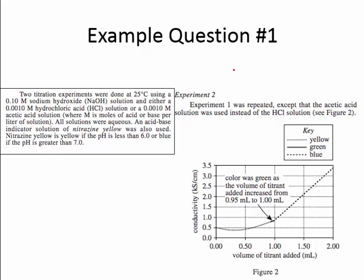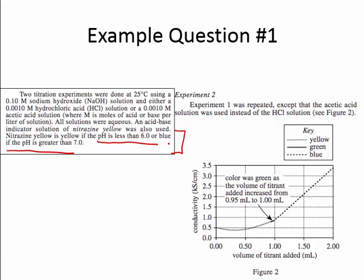I've copied the graph and the relevant piece of the passage that gives us the information we need on pH. If you were encountering this on the ACT, you would skim the passage to find the key term pH. The key sentence is: an acid-base indicator, nitrazine yellow, was also used. Nitrazine yellow is yellow if the pH is less than 6.0, or blue if the pH is greater than 7.0. So at 0.2 milliliters of titrin added, the solution is yellow, which means the pH is less than 6.